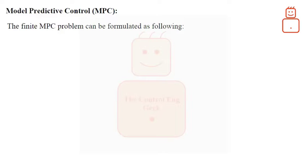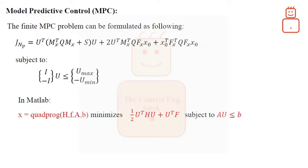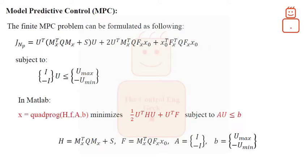From all above, the finite MPC problem can be formulated as following. The finite cost is written as shown which is subjected to the control hard constraints. In MATLAB, we have the function quadprog. In our case it needs four variables: capital H, F, capital A, and B. This function attempts to minimize the shown cost that is subjected to the inequality AU equal or less than B. From our above MPC problem, we can identify the required variables as shown below which are taken directly from the finite cost function given above the slide.